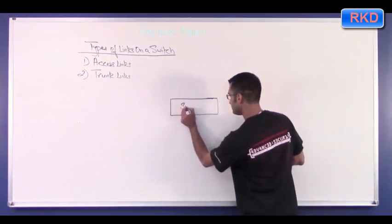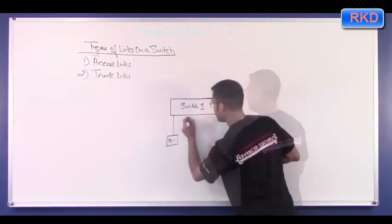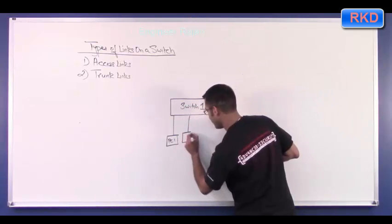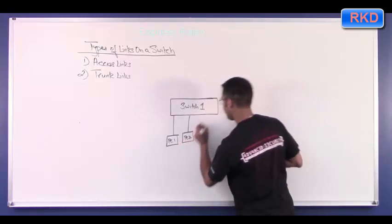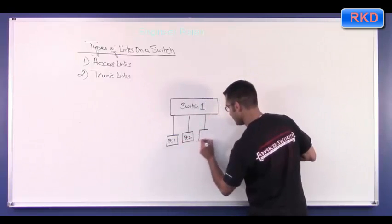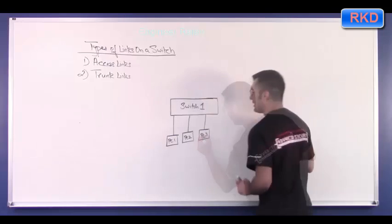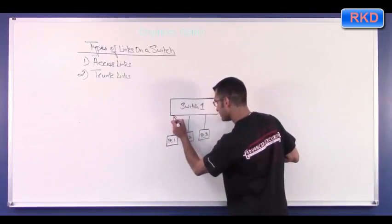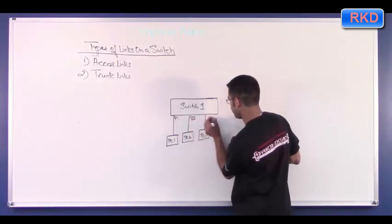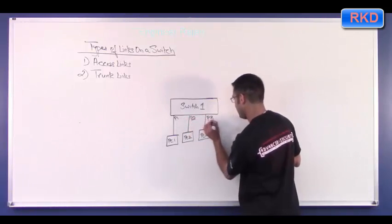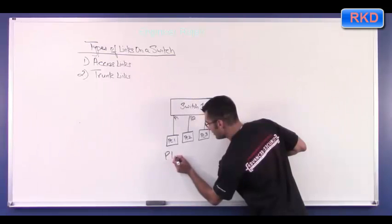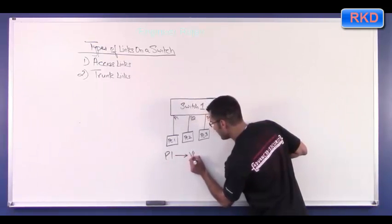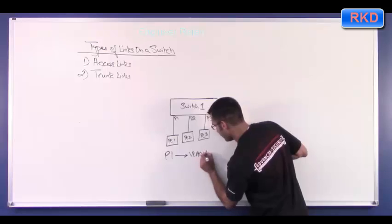Once again, my little box, which I call a switch, it says switch one. Let's say I have several PCs attached to this switch, PC one, PC two, PC three. And let's say this port is port one, this is P two, and this is port three, or P three.